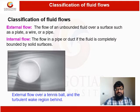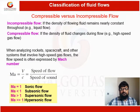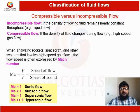The boundary layer separates and forms a large wake region. Due to this wake region, a drag force is generated, and because of the wake region, it may cause the flow behind the tennis ball to turn turbulent and increase heat transfer.